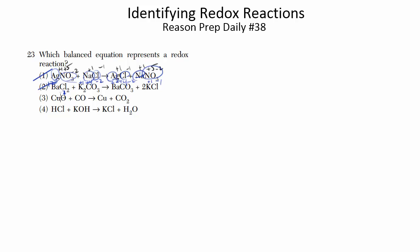How about reaction three? Oxygen is pretty much always -2, as it is here, so copper is +2. On the other reactant, oxygen is -2 and copper is +2. On the right side, notice copper is by itself, and when you have a lone element, the oxidation number is zero. The oxygen is still -2, but the carbon is +4.